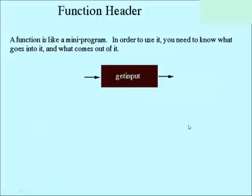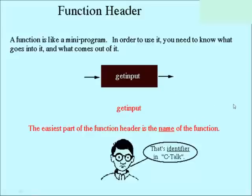A function is like a mini program — think about it as a black box. In this case, we have a black box called getInput. In order to use a miniature program, you need to know what goes in and what comes out of it. The easiest part of the function header is the name, so we'll name it getInput. That's an identifier in C, and just like variable names, it follows the same rules: letters and digits only, must start with a letter, no spaces, all of that.